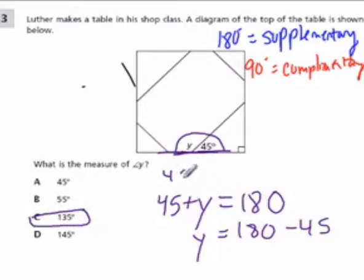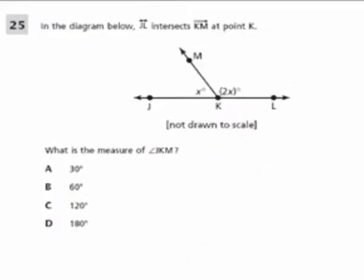And you could check 45 plus 135. That's a supplementary pair. And that does equal 180 degrees. And in this, we actually have a similar situation.